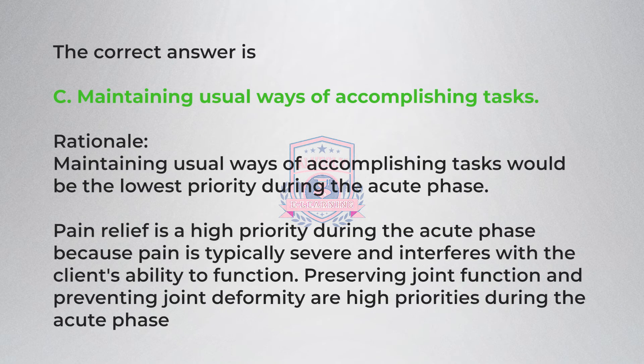Correct answer is C: maintaining usual ways of accomplishing tasks. Rationale: Maintaining usual ways of accomplishing tasks would be the lowest priority during the acute phase. Pain relief is a high priority during the acute phase because pain is typically severe and interferes with the client's ability to function. Preserving joint function and preventing joint deformity are high priorities during the acute phase.